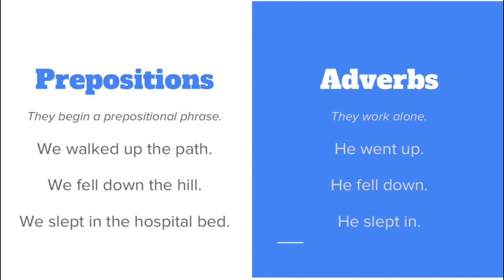We walked up the path. So 'we' is our subject, 'walked' is the verb, and then 'up the path' tells us where we walked. In this case, 'up' is a preposition. It's telling us where they walked, and it's part of a prepositional phrase. We've got the object of our preposition at the end, making 'up the path' a prepositional phrase.